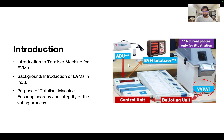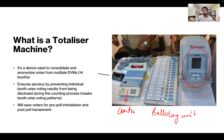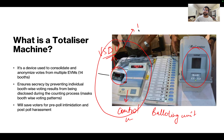There is one more unit known as VSTU, or VVPAT Status Display Unit. All these can be seen in the next figure. Here this is the VVPAT and this is the balloting unit, and this unit is the control unit. The VSTU, which is the VVPAT Status Display Unit, remains with the presiding officer, and the balloting unit as well as the VVPAT remain with the polling compartment.